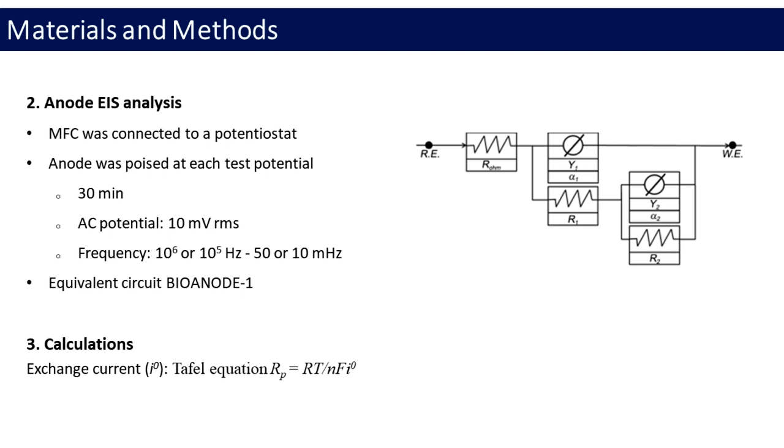Second part is anode EIS analysis. Potentiostat was used to carry out EIS experiment. Anodes were poised at each test potential for 30 minutes at each potential with the following conditions: AC potential 10 mV RMS initial frequency 10^6 or 10^5 Hz, final frequency 50 or 10 MHz, and 10 points per decade of data acquisition frequency.